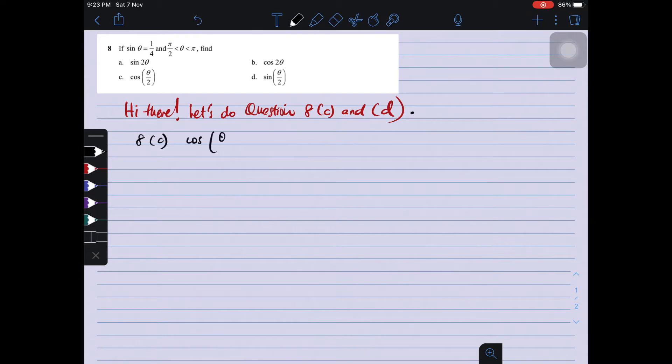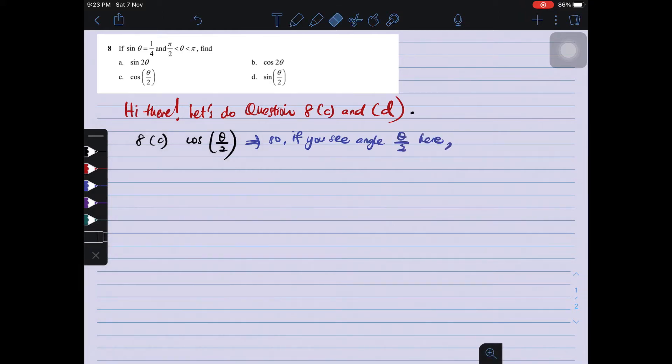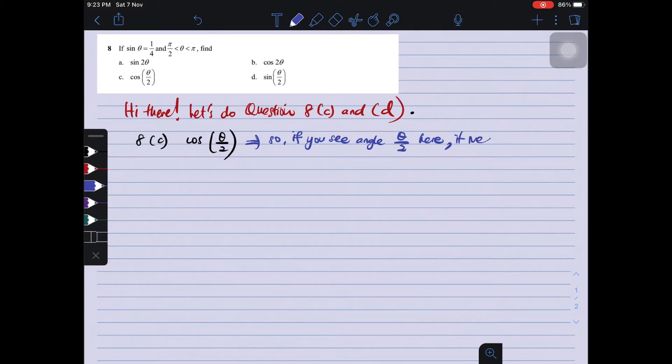Okay, so 8C, we have cos θ/2. Our angle is θ/2. So if you see angle θ/2 here, what does it mean? It actually means we need to use double angle. It is related with the half angle formula. Both of them are involved.